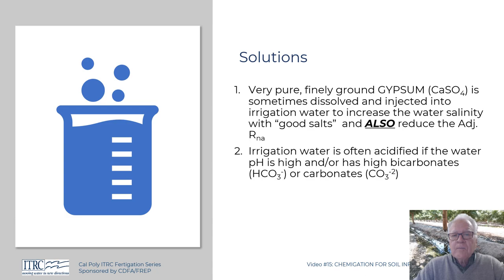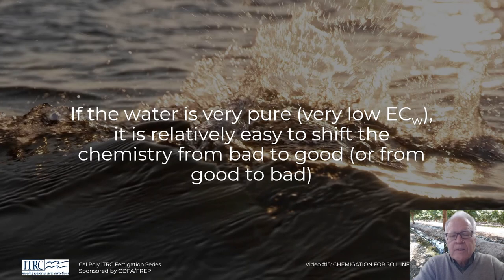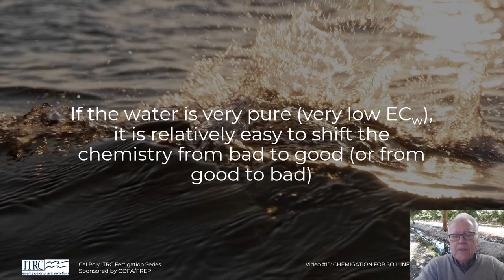Something to consider: the ease with which you can shift the chemistry depends on how much salt is in the water. If there's very little salt, it's easy to shift the chemistry one way or the other — you can improve it without much extra chemical, but you can also mess it up. It's like putting acid on sandy soils: you can flip the soil pH very quickly and actually kill your crop — the acid can dissolve aluminum in the soil. Very pure irrigation water combined with sands with almost no cation exchange capacity means the chemistry flips very easily.